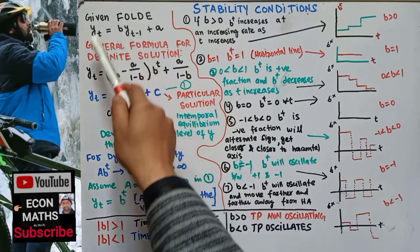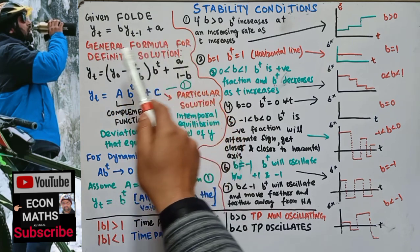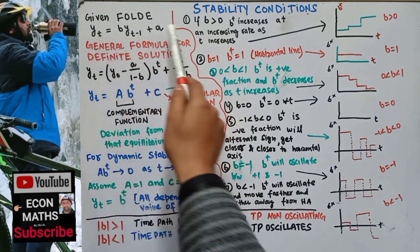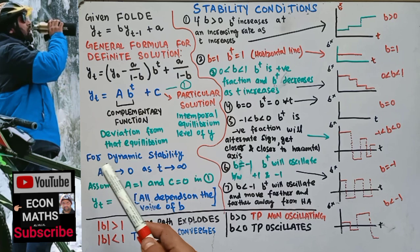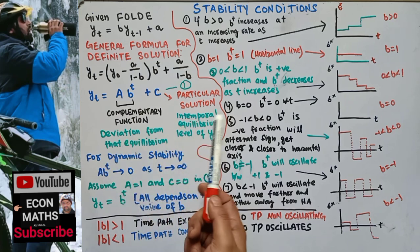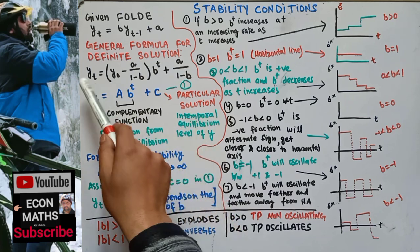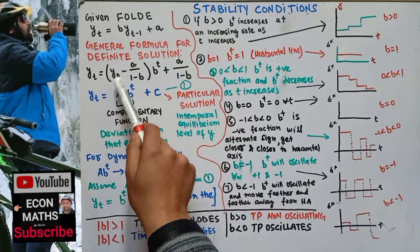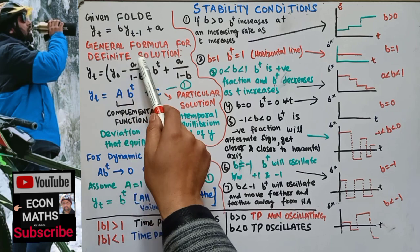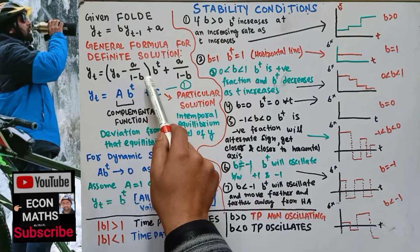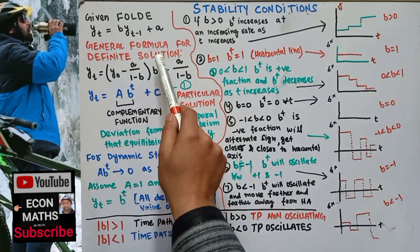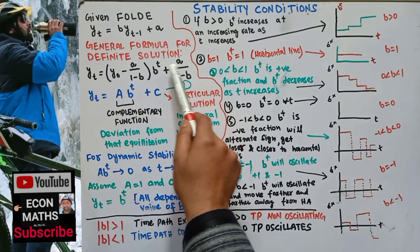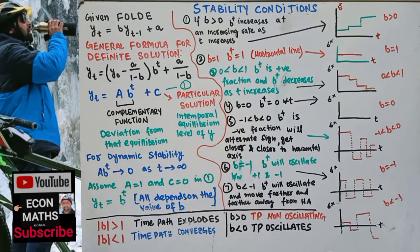The general formula for the definite solution of this first-order linear difference equation is: y_t equals (y_0 minus a/(1−b))·b^t plus a/(1−b).